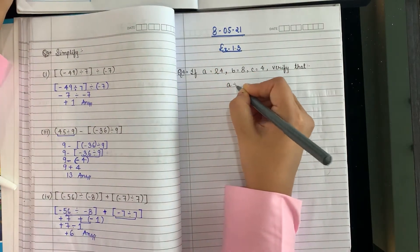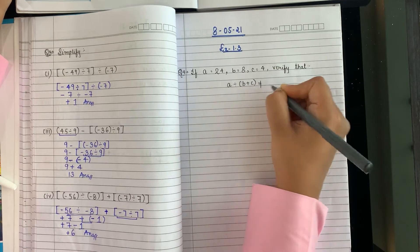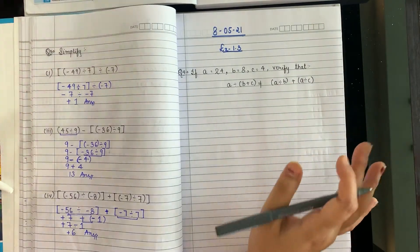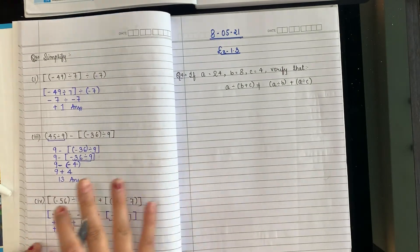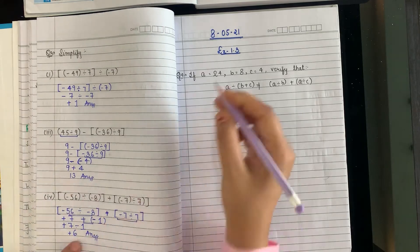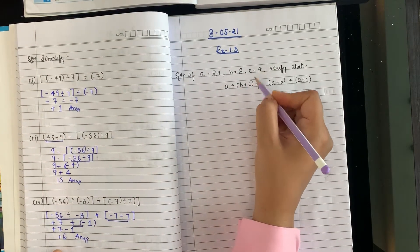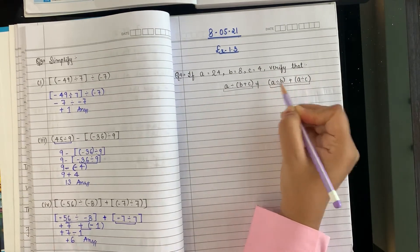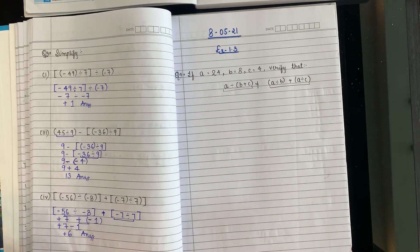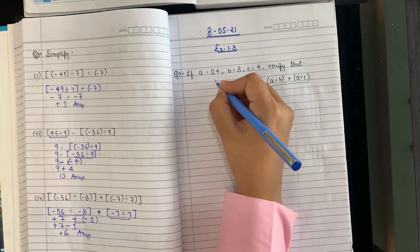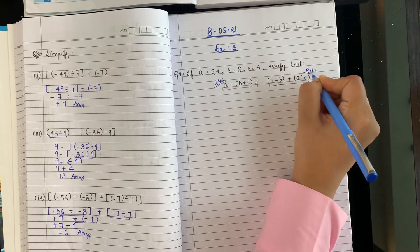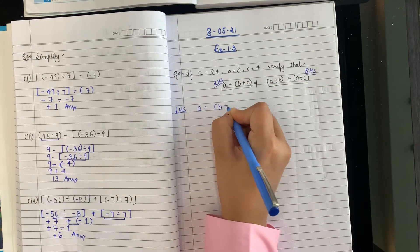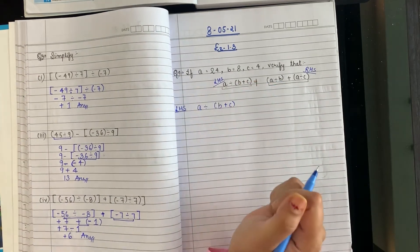Now let me explain the meaning of the question. We are given a = 24, b = 8, c = 4. We need to verify that a ÷ (b + c) ≠ a ÷ b + a ÷ c. Let us solve the left-hand side first, which is a ÷ (b + c). Let us put in the values.